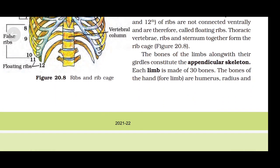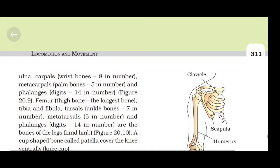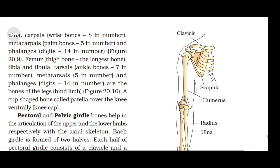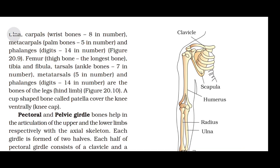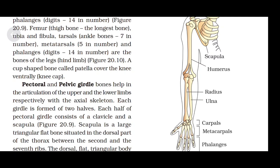The bones of the limbs along with their girdles constitute the appendicular skeleton. Each limb is made of 30 bones. The bones of the upper limb are: humerus; radius and ulna; carpals (wrist bones, 8 in number); metacarpals (palm bones, 5 in number); and phalanges (digits, 14 in number). The bones of the lower limb are: femur (thigh bone — the longest bone); tibia and fibula; tarsals (ankle bones, 7 in number); metatarsals (5 in number); and phalanges (digits, 14 in number). A cup-shaped bone called the patella covers the knee ventrally — the kneecap.